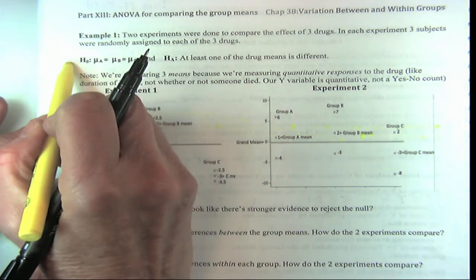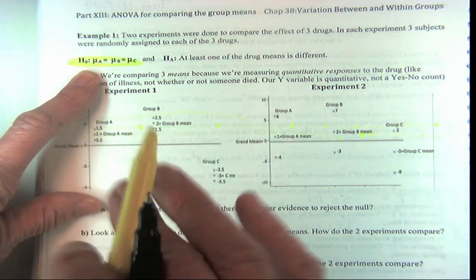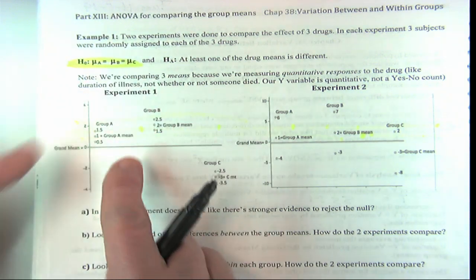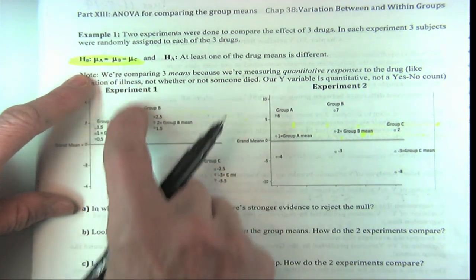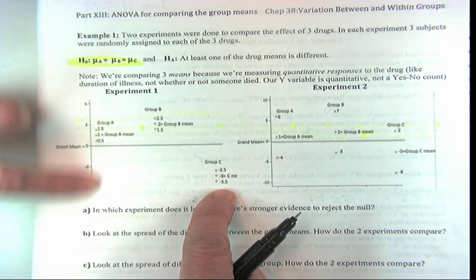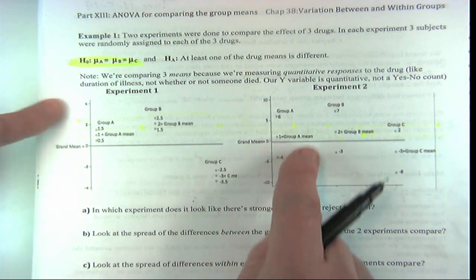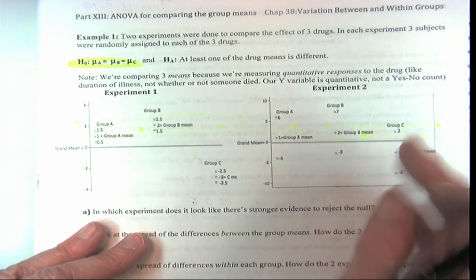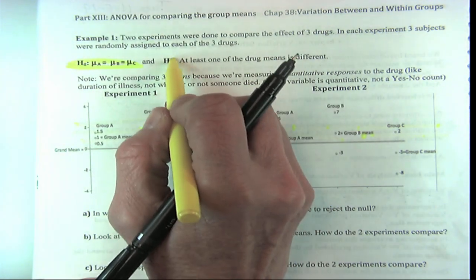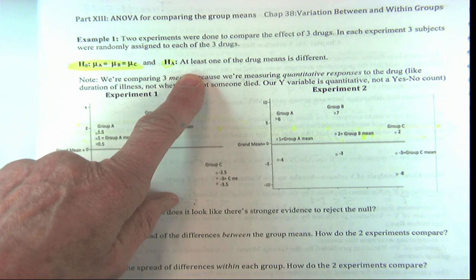The null says that in the population, the drugs are all the same — even though we saw differences between the three people who took drug A, drug B, and drug C on some quantitative Y variable measuring how good the drug was. The null is that in the population there really isn't a difference; we just happen to see some differences in our sample due to the luck of the draw. The alternative, as usual, is that they're not all equal — at least one of them is different.